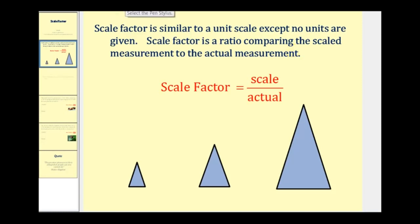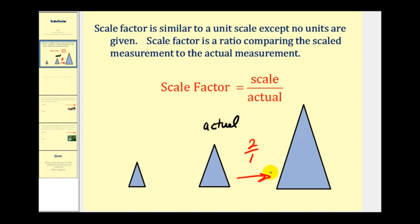For example, looking at these triangles, if the original or actual triangle was the one in the middle, and we had a scale factor of two, the ratio would be two to one. So the scaled triangle would be twice as large as the original, producing the larger triangle shown. If the scale factor was one-half, the scaled triangle would be half the size of the original, as seen on the left.